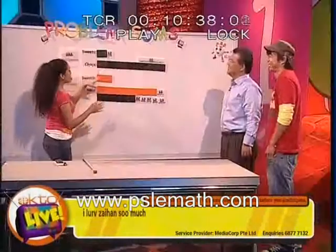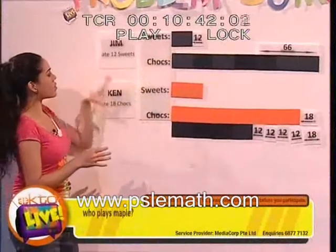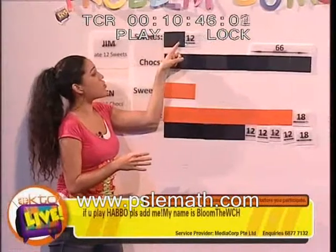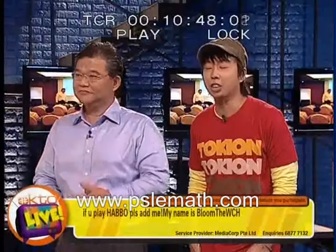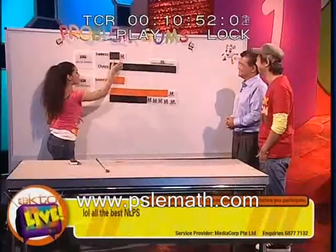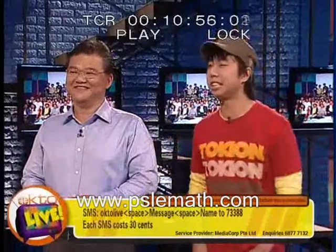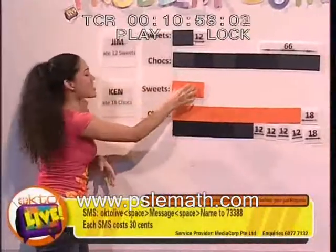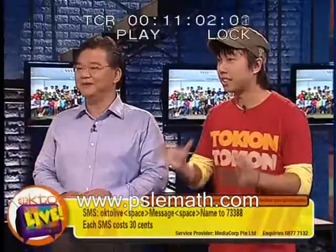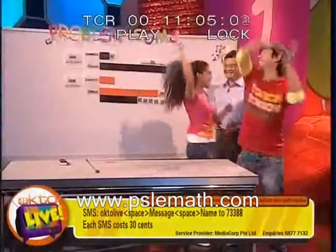So one unit is 66 divided by 3, which is 22. To find how many sweets Jim had, it's 22 plus 12, which equals 34. Since that's only half of what Ken bought, we multiply by 2: 34 times 2 equals 68. So Ken bought 68 sweets! Norman confirms — yes, that's the correct answer!